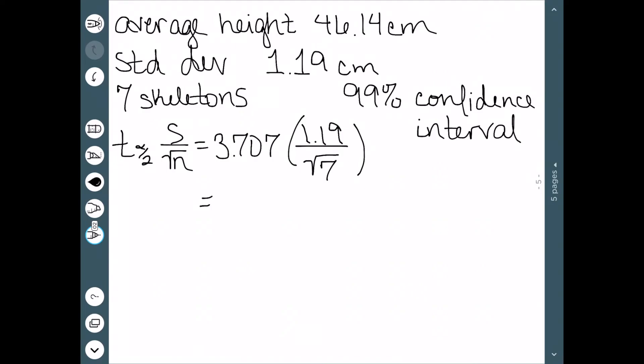So now we can calculate this value. And when we do, we get 1.67. So this is our margin of error. We now need to add and subtract this from our mean. So 46.14 minus 1.67 is less than the actual average, which is less than 46.14 plus 1.67. And working out that addition and subtraction problem, we have that the actual average height of this particular species is somewhere between 44.87 and 47.81. And we're 99% sure that we are right about that.